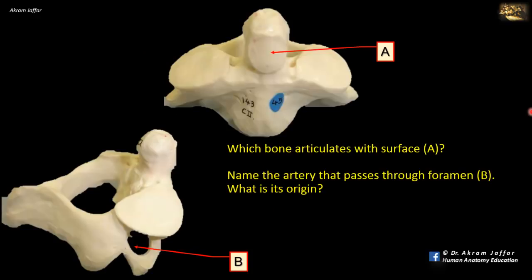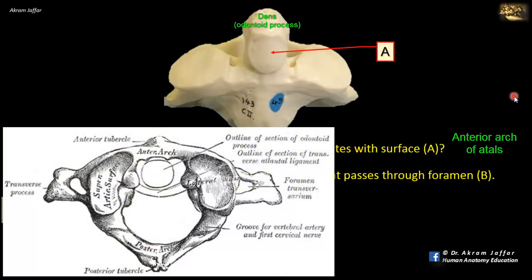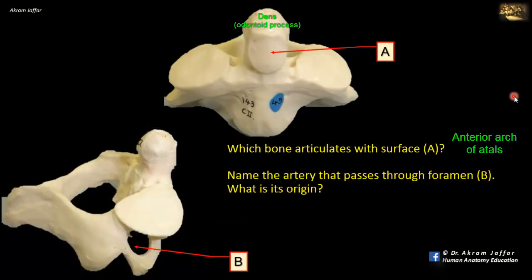Which bone articulates with surface A? This is the axis, or the second cervical vertebra, characterized by a dens, or odontoid, process. The odontoid process has an articular facet located anteriorly, which articulates with a similar facet on the anterior arch of the atlas. The joint is called the median atlanto-axial joint and is a synovial joint of the pivot variety, allowing rotation of the atlas over the axis.